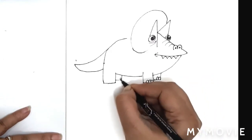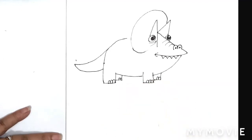Add some knees to the legs of the dinosaur and some spikes on the head area.